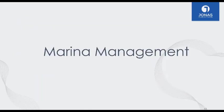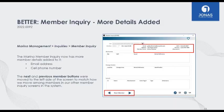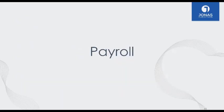Next is the Marina module — for those who have a marina at their club. We made one quick change this quarter: in the Member Inquiry screen, we added the email address and cell phone number in the top portion. We've also adjusted the screen to match other member inquiry screens, making the program more consistent overall.